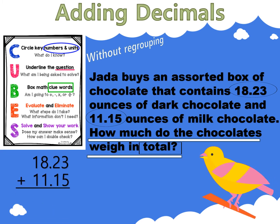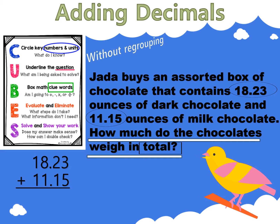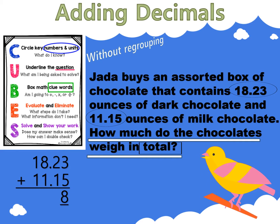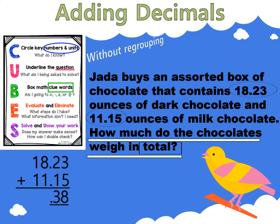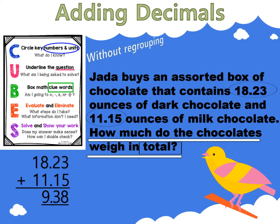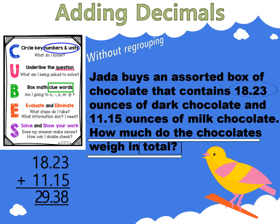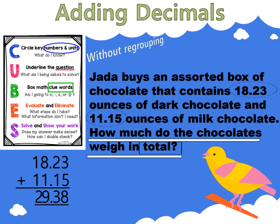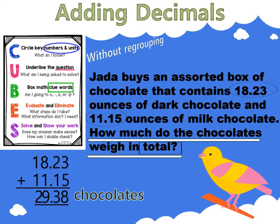Line up your numbers. Three hundredths plus five hundredths is eight hundredths. Two tenths plus one tenth is three tenths. Place your decimal point. Eight ones plus one one is nine ones. One ten plus one ten is two tens. The total weight of the chocolates is twenty-nine and thirty-eight hundredths.